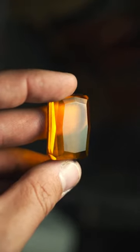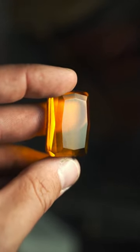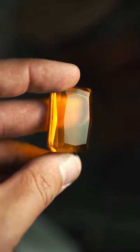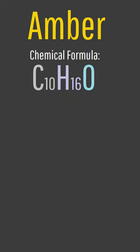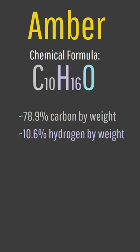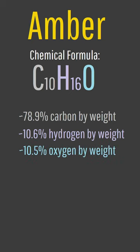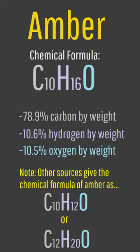While amber does have a variable chemical formula, one of its chemical formulas is considered to be C10H16O, meaning it is approximately 78.9% carbon, about 10.6% hydrogen, and about 10.5% oxygen by weight.